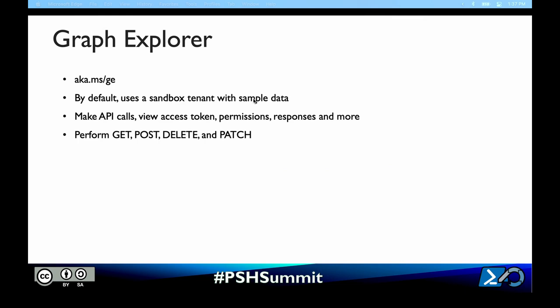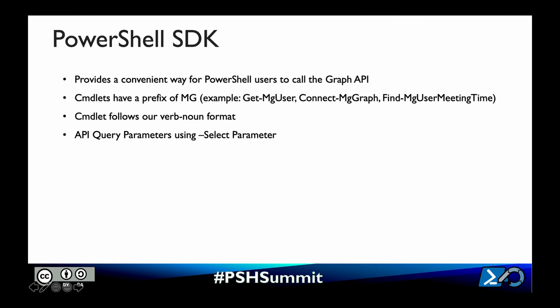The PowerShell SDK provides a more PowerShell-friendly way to connect and work within the Microsoft Graph. Instead of dealing with endpoints and API query parameters, we work with familiar items like parameters and cmdlets that do most of the heavy lifting behind the scenes. The SDK cmdlets all have a prefix of 'mg' — so get-mguser, connect-mggraph — where 'mg' stands for Microsoft Graph. This was chosen so none of the cmdlets clash with any others from other PowerShell modules.